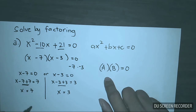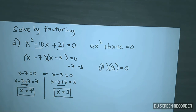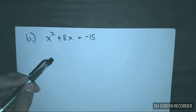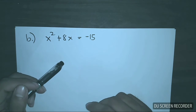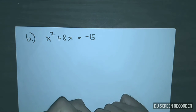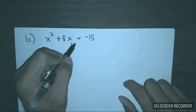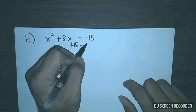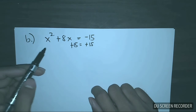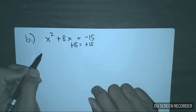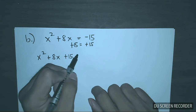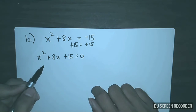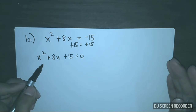The two possible values of x are 7 or 3. After example letter A, let us solve x squared plus 8x is equal to negative 15 by factoring. The first thing is you need to rewrite this equation in standard form by adding 15 to both sides of the equation, giving x squared plus 8x plus 15 is equal to 0. Since the right side is equal to 0, we are now ready to do factoring.